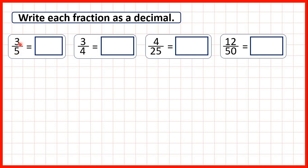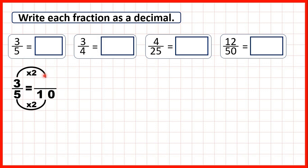First we have three fifths. Ten is a multiple of five, so we can find a fraction equivalent to three fifths which has a denominator of ten. We use multiplication to find equivalent fractions, and five times two is ten. What we do to the denominator, we do to the numerator as well, and three times two is six. So three fifths is equivalent to six tenths, which means we can write it as the decimal 0.6, because the first digit after the decimal point is the tenths digit.